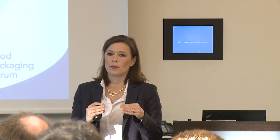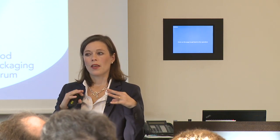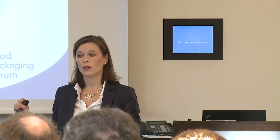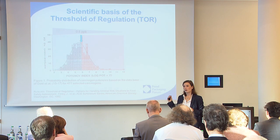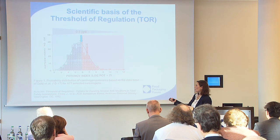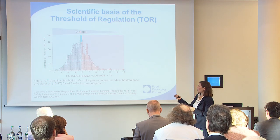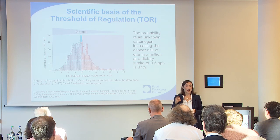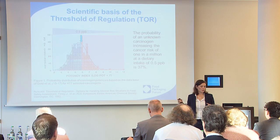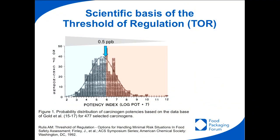Scientists working at the FDA — Alan Rulis and others — extrapolated this to the human situation. They set an acceptable risk for cancer incidence in the human population of one in a million. Since the animal data represented a one-in-two risk, they divided the data by 500,000. Then they said: here is the dietary concentration, 0.5 ppb. The probability of an unknown chemical increasing the cancer risk by one in a million at a dietary intake of 0.5 ppb is 37%. In other words, you have a 63% certainty that an unknown chemical will not increase the cancer risk in the human population.